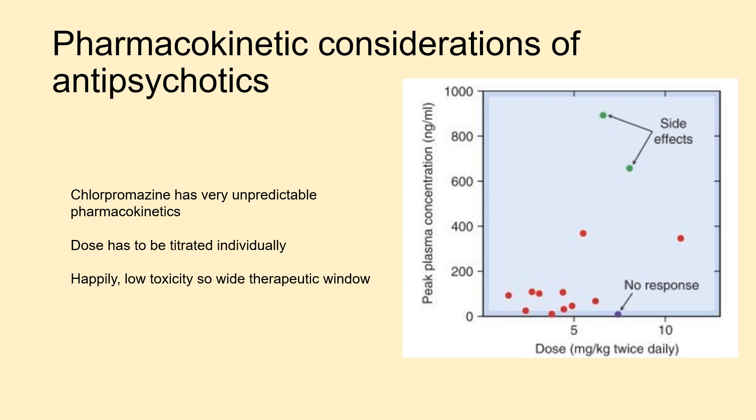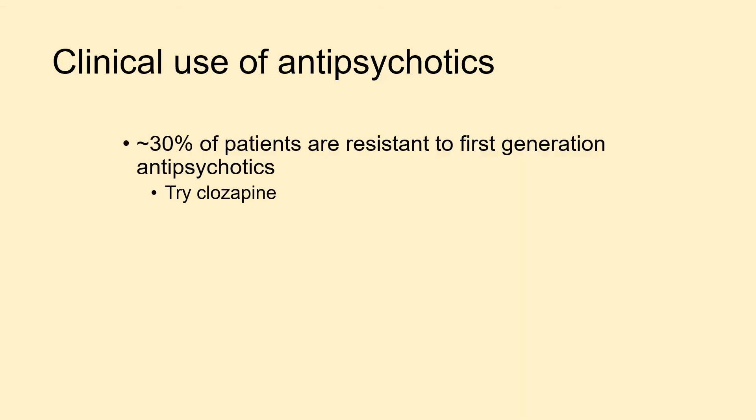Chlorpromazine has very unpredictable pharmacokinetics, meaning it must be titrated individually for each patient. Fortunately, it has low toxicity so its therapeutic window is quite wide. Unfortunately, about 30% of patients are resistant to first-generation antipsychotics.